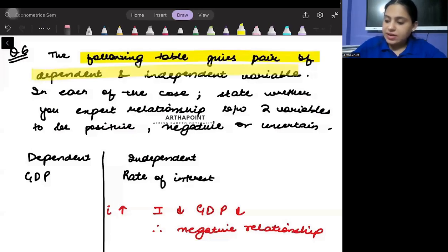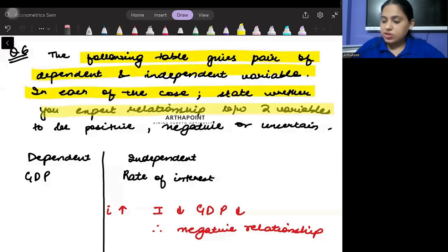Following table gives pair of dependent and independent variable. In each of this case state whether the relationship is positive, negative or uncertain.